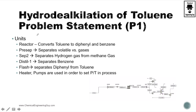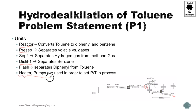The unit operations we need are: first the preheater, then the reactor, then the pre-separator to separate volatile gases from liquids, then separator two to separate hydrogen and methane, then a distillation column to separate benzene, and finally a flash unit to separate the final product from the bottoms. We also need utility units such as heaters and pumps.